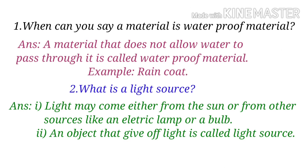Children, now let us see again from the first question. First: when can you say a material is a waterproof material? Answer: a material that does not allow water to pass through it is called waterproof material. Example: raincoat. Second: what is a light source? Answer: light may come either from the sun or from other sources like an electric lamp or a bulb. An object that gives off light is called light source.